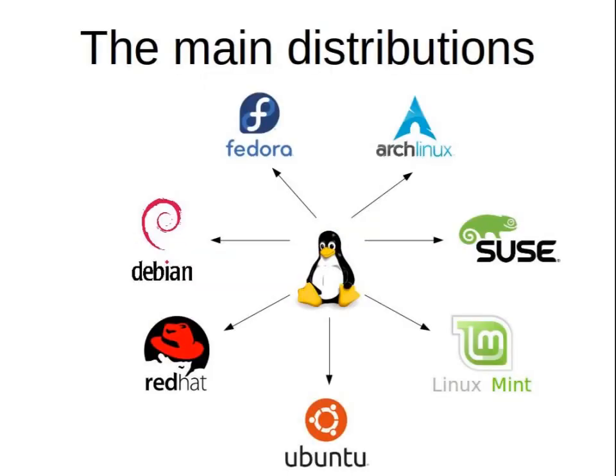Each of these operating systems with similarities is called a distribution. There are at the moment 278 active distributions in the DistroWatch database. Here are seven of the most important Linux distributions.